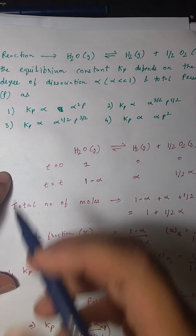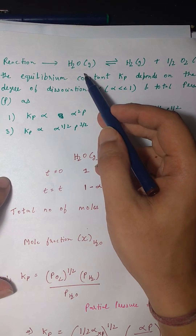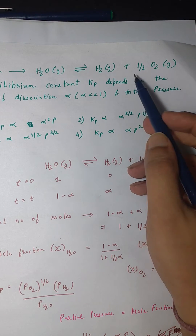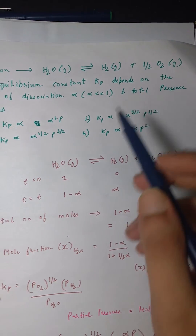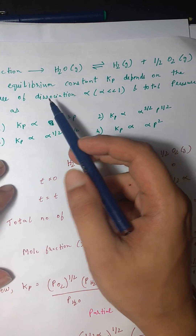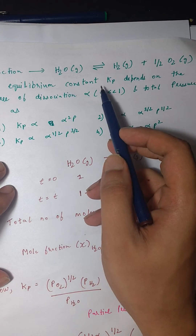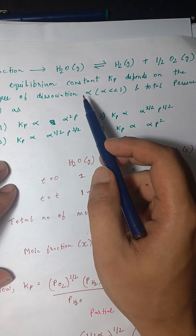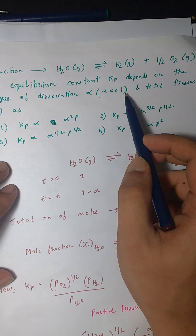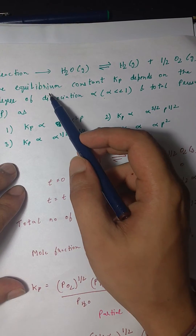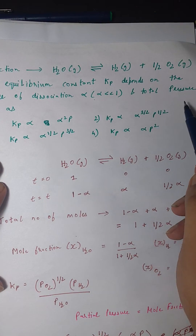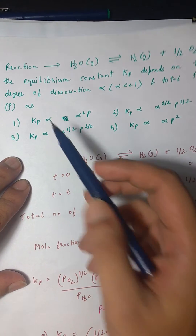The question gives the reaction: H₂O(g) ⇌ H₂(g) + ½O₂(g). We are given that the equilibrium constant Kp depends on the degree of dissociation, which is denoted as alpha (α), and it is mentioned that α is much much less than 1. We have to find the dependence of Kp on α and the total pressure P.